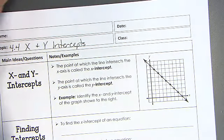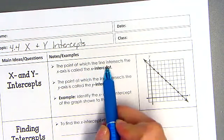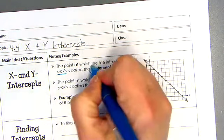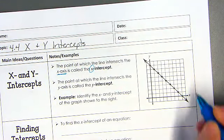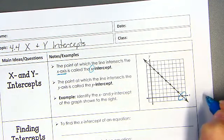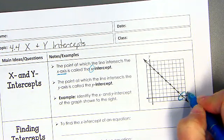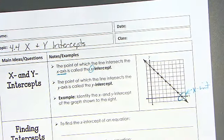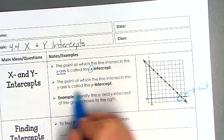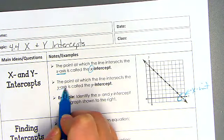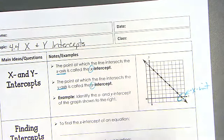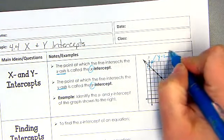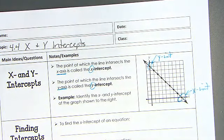So it says the point at which the line intersects the x-axis is called the x-intercept, which is going to be this point here. This is the x-intercept. The point where the line intersects the y-axis is the y-intercept. So that's going to be this point here, which we've talked about with slope intercept form.